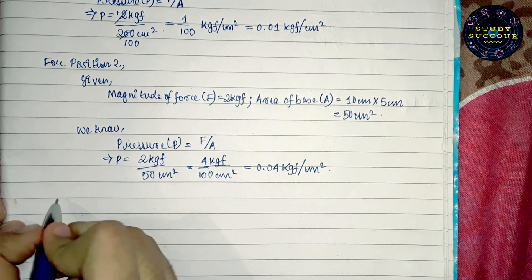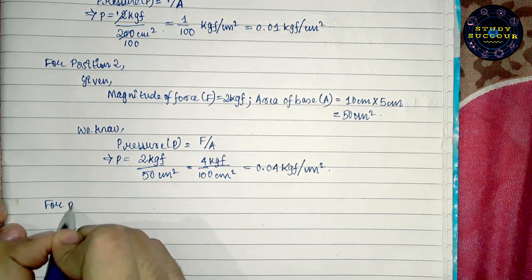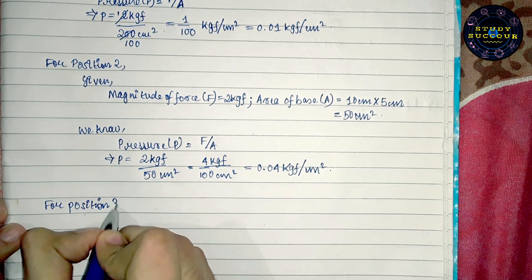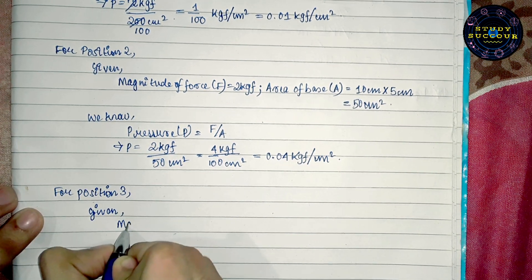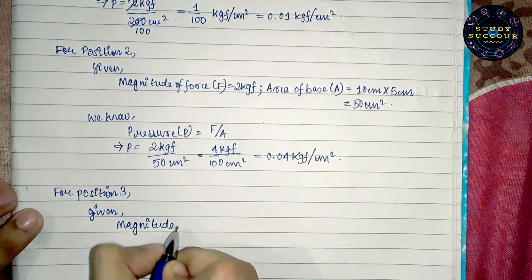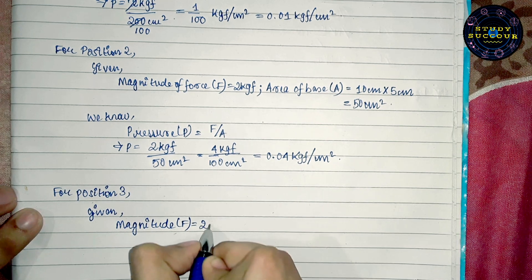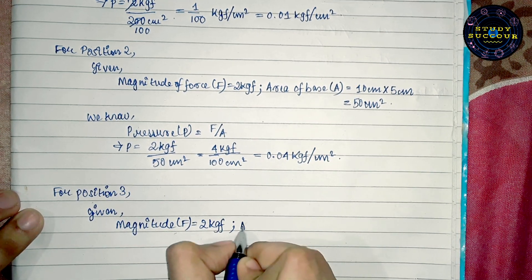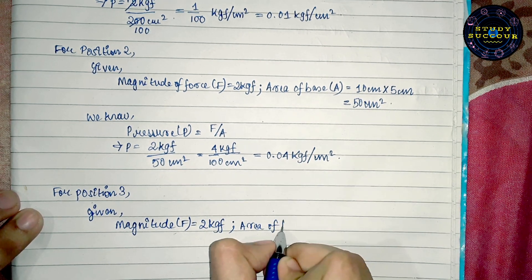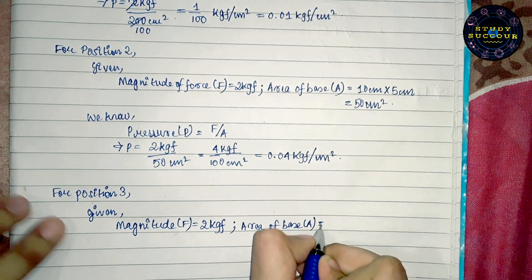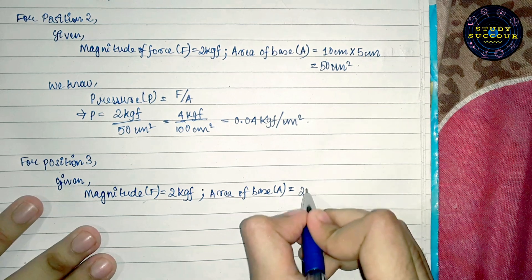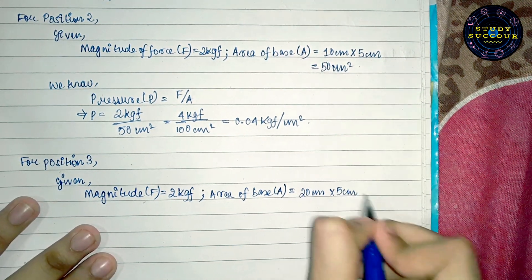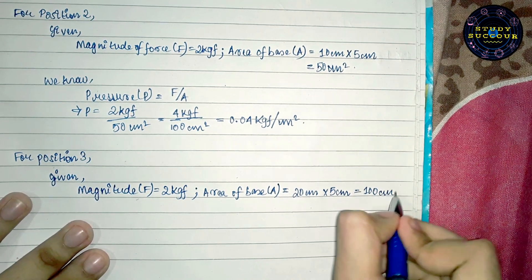Position 3. We are again given magnitude of force F equals 2 kgf, and area of base is A equals to, here we see, 20 cm into 5 cm, which is equals to 100 cm².